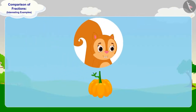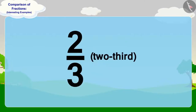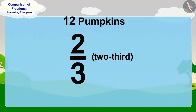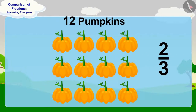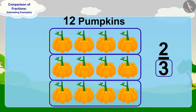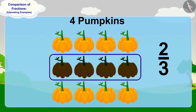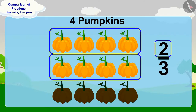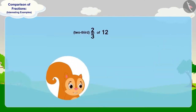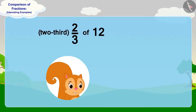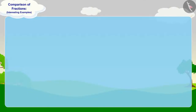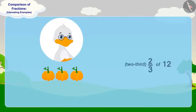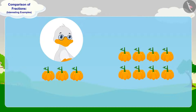First, we will find the number of pumpkins that Chanda gets. To find two-third of 12 pumpkins, we have to divide 12 pumpkins into three equal parts. In this way, there are four pumpkins in each part. Now, to find two-third parts, we have to take two parts out of these three equal parts. In this way, two-thirds of 12 pumpkins is eight pumpkins. Babban will give one-fourth part — three pumpkins — to uncle, and two-thirds — eight pumpkins — to Chanda.